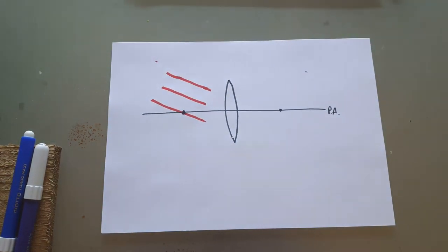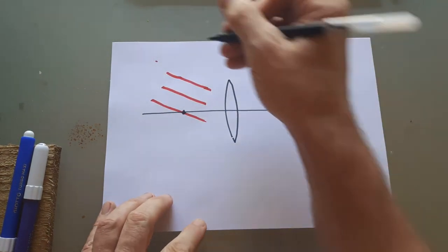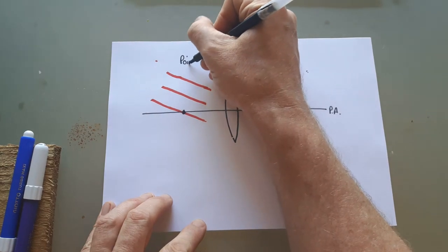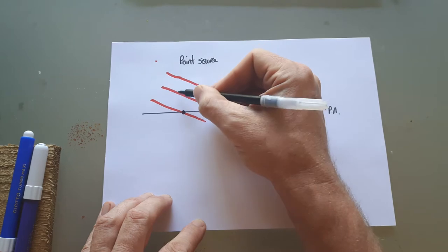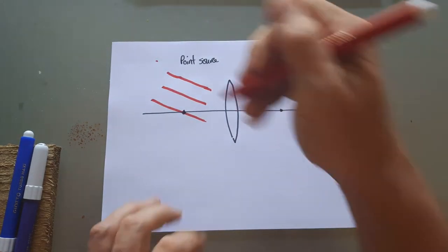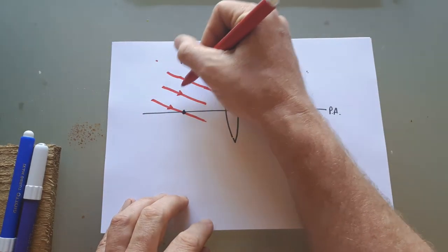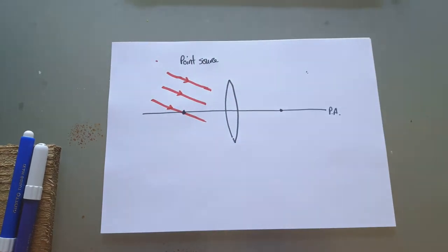I'm just going to talk about the idea of a point source first. These three rays of light are all coming from a distant source, a point source, which basically means it's a tiny spot of light in the sky, from a very distant galaxy or distant star.